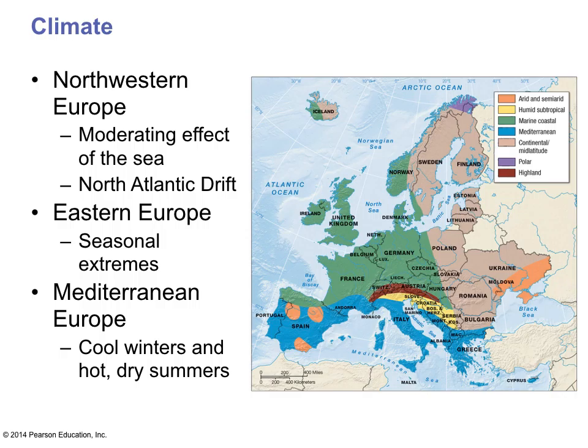The climate of Europe generally is excellent for agriculture and for development. The area in green shows what we call the marine coastal climate, which is relatively mild. Even though they're higher in latitude than other parts of the world, it does very well. You can see all the different climate regions: Northwest Europe, Eastern Europe, Mediterranean Europe.